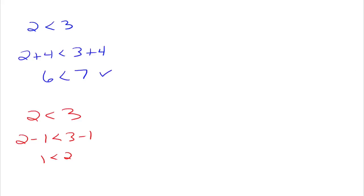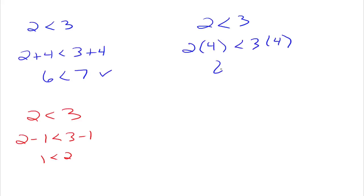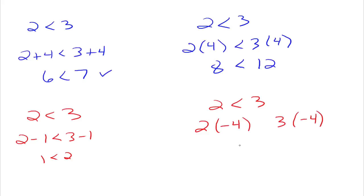But now, what about multiplying? We have 2 is less than 3. If we multiply both sides by 4, we get 8 is less than 12 — that's true. But what if we multiply both sides by negative 4? We get negative 8 and negative 12. Is negative 8 less than negative 12? No, that's not a true statement. In order to make it a true statement, we have to reverse the inequality symbol. Negative 8 is indeed greater than negative 12.